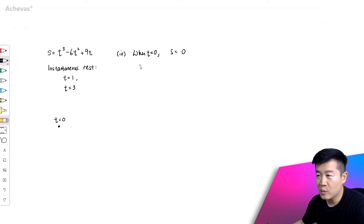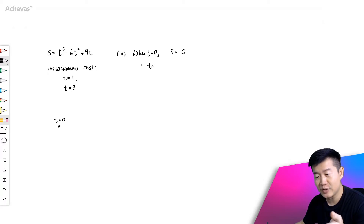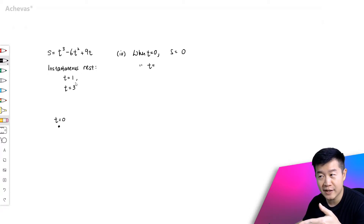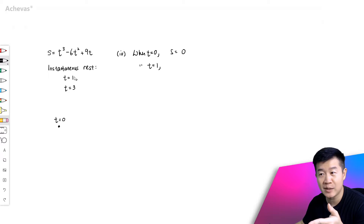We are looking at from t equals 0 to 4. Between 0 and 4, there are two instantaneous rests. So the next logical point that we want to work on is when t equals 1, when it first comes to an instantaneous rest.